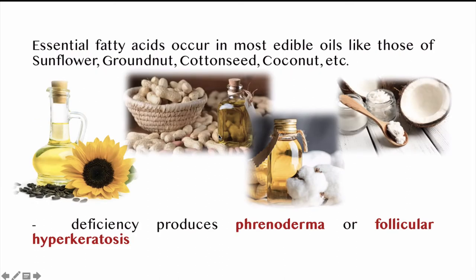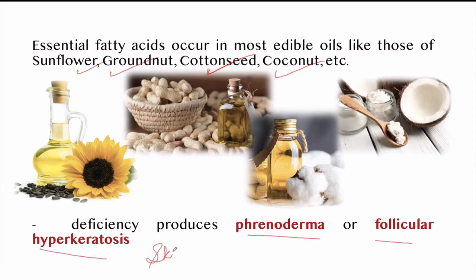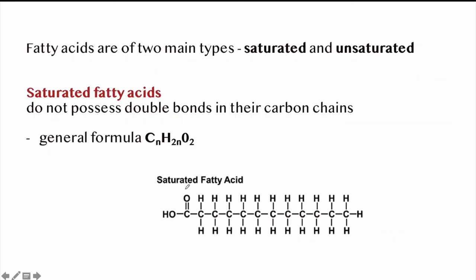Essential fatty acids occur in most edible oils like sunflower oil, groundnut, cottonseed, coconut, etc. Deficiency produces phrenoderma or follicular hyperkeratosis, which are skin-related diseases. Fatty acids are of two main types: saturated and unsaturated. Saturated fatty acids do not possess a double bond in their carbon chains.